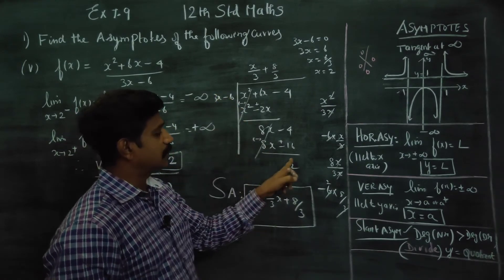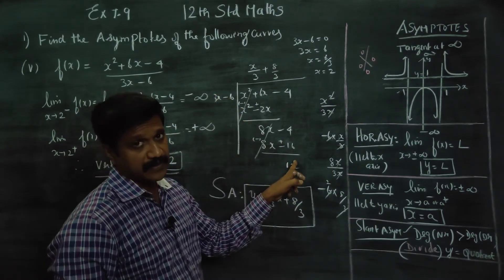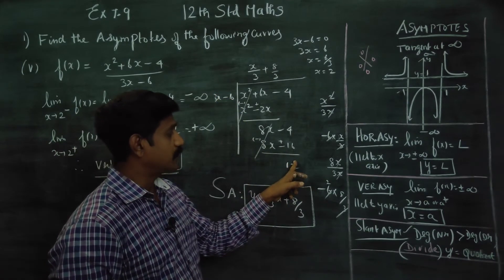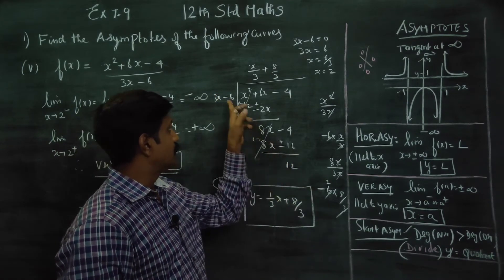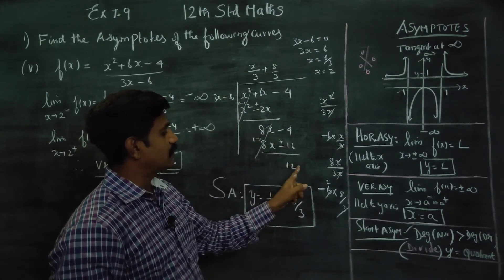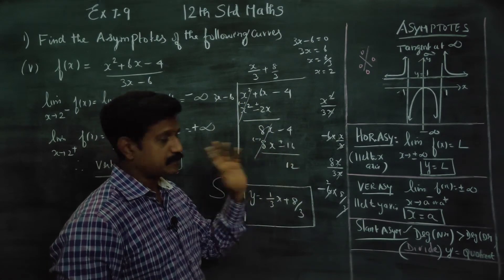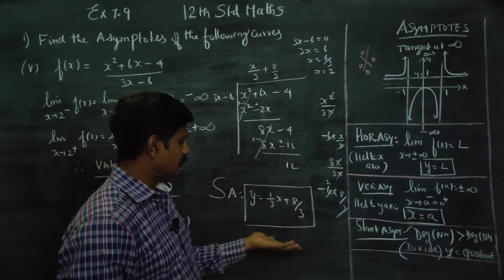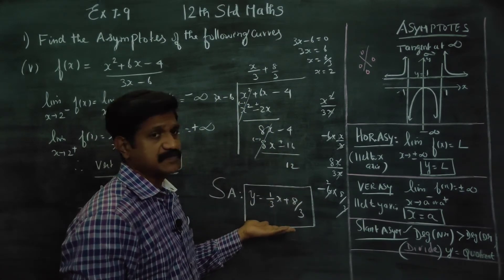When the degree of the numerator is one more than the degree of the denominator, the quotient will be degree 1 — that is, of the form constant·x plus constant — giving us a slant asymptote.